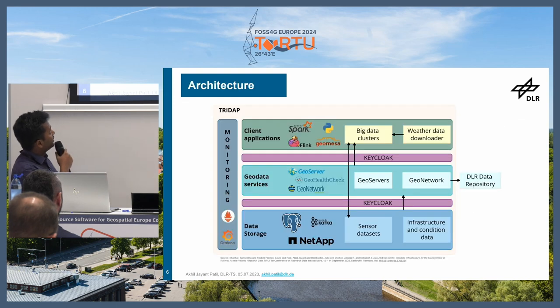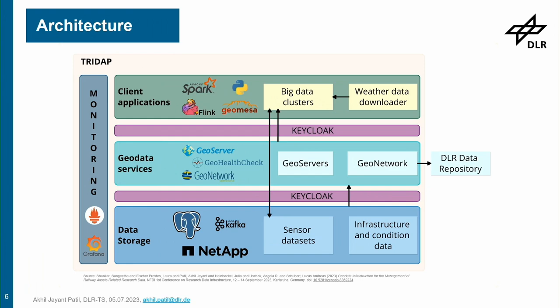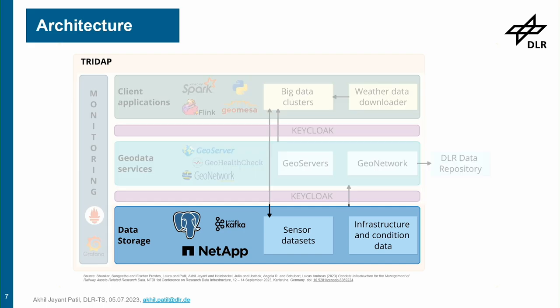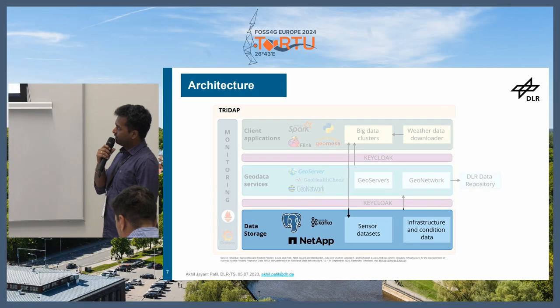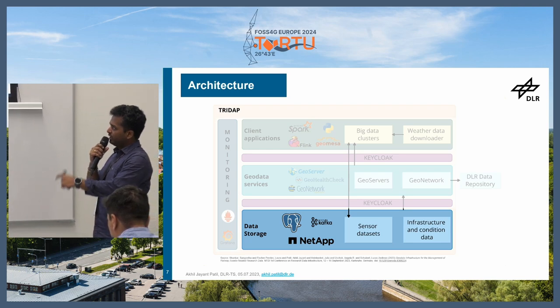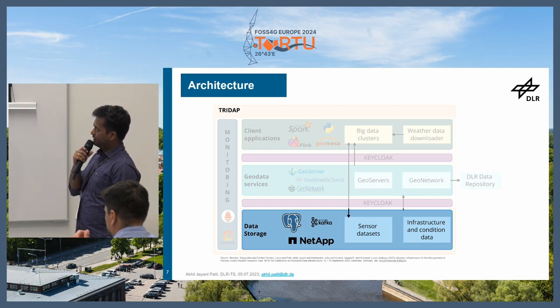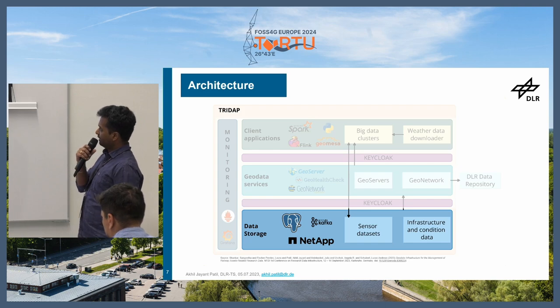Looking at the architecture of the tool, there are various layers through which we have achieved our goals. Starting from the data storage layer: we have data coming from live streams like Kafka, and also in bulk file formats, which can be structured or unstructured. For unstructured data files, we generally dump them into the NetApp storage tool, which we call LDS.